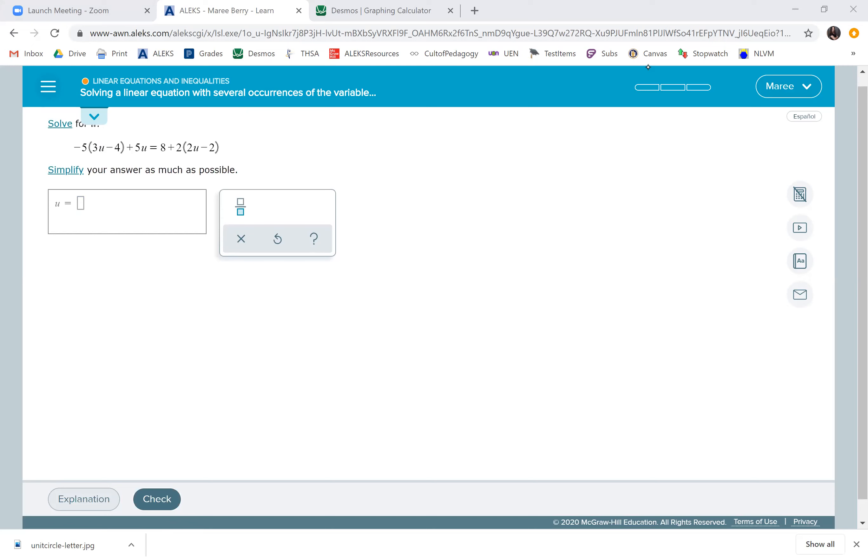We're going to do the distributive property first. Negative 5 times negative 3u is negative 15u, then negative 5 times negative 4 is positive 20, plus 5u equals 8. Then 2 times 2u is 4u, and 2 times negative 2 is negative 4. That was the distributive property.